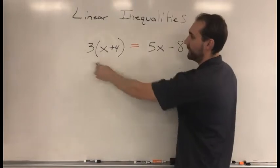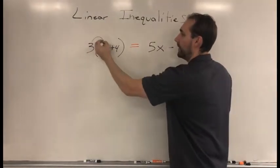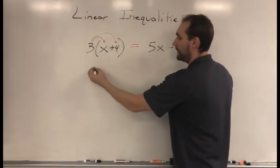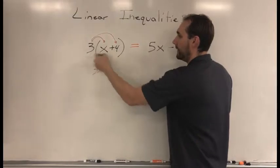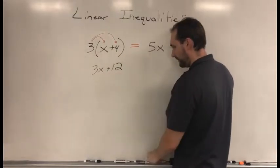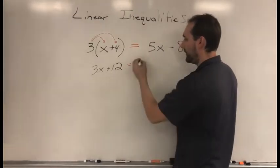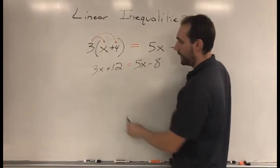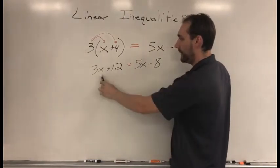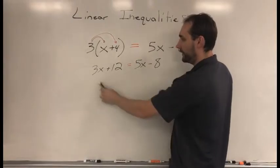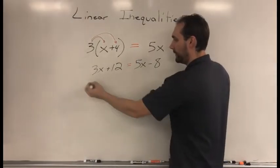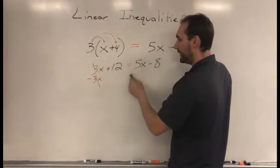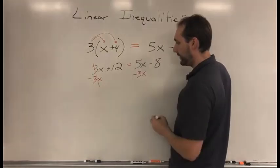First thing I want to do here is take this 3 and distribute it across my parentheses. Order of operations, work with what's in parentheses first. So 3 times x is 3x, and 3 times 4 is 12. And that equals 5x minus 8. Nothing else to do here. Now your next step in algebra will be to get x on one side of the equal sign. So what's the opposite of a plus 3? I'm going to go ahead and move this over. That is 8 minus 3x. That will cancel. And what do I do on one side of the equal sign? I have to do it on the other side. So minus 3x.